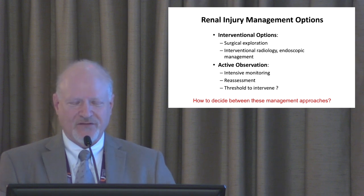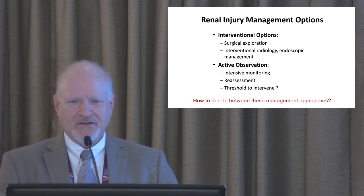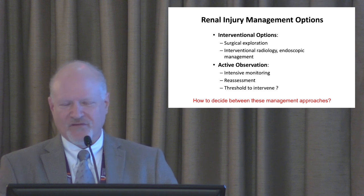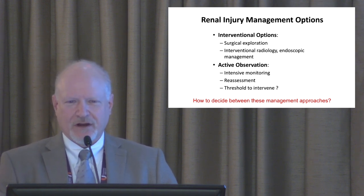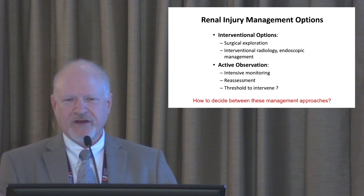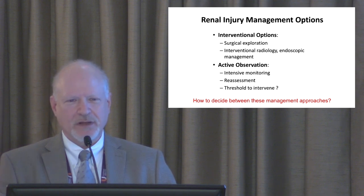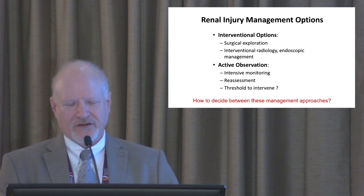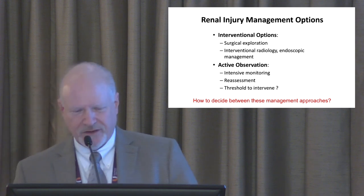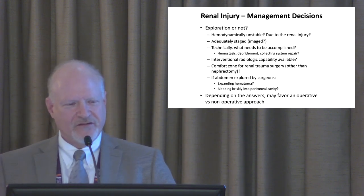The interventional options are surgical exploration, some sort of IR intervention, or endoscopic management. The observational approach needs to come along with a clear plan for reassessment and a clear threshold to intervene — how many units of blood, how many episodes of hypotension, how much hematuria, when are you going to change to an active management approach?